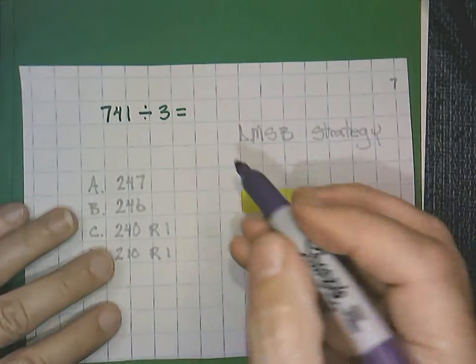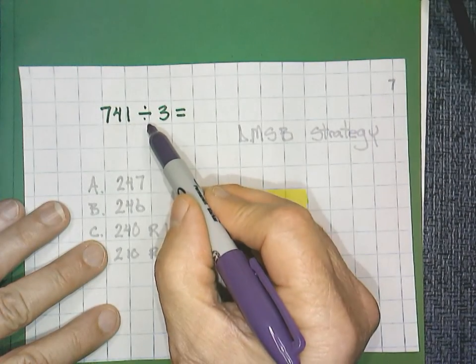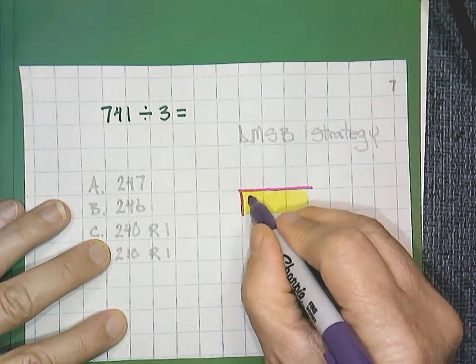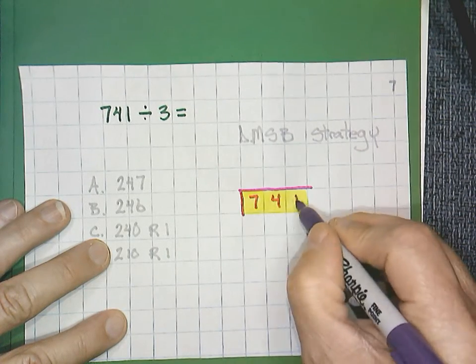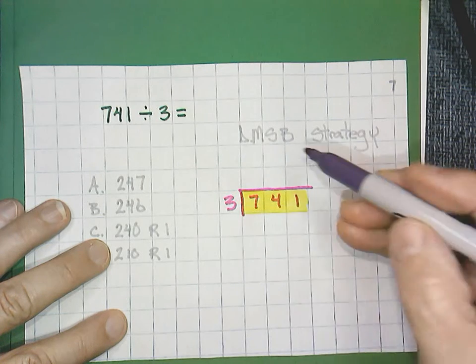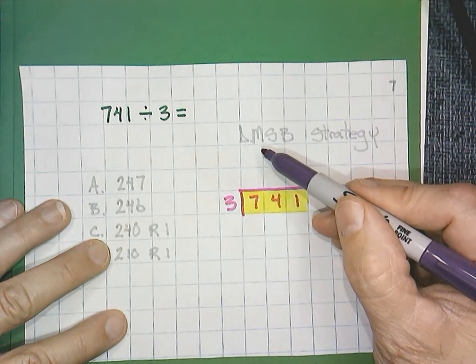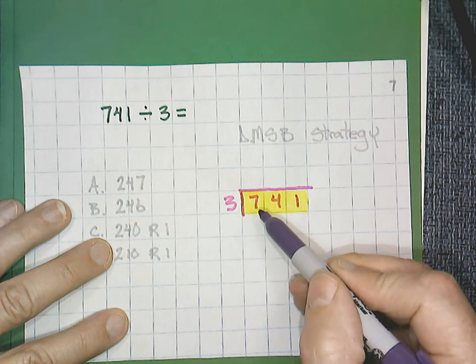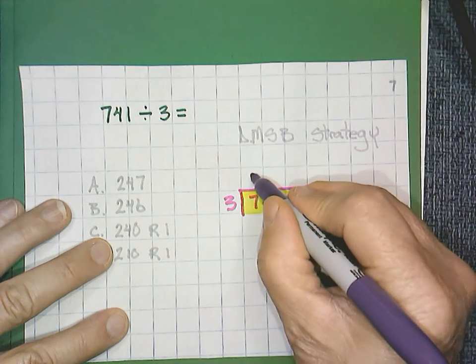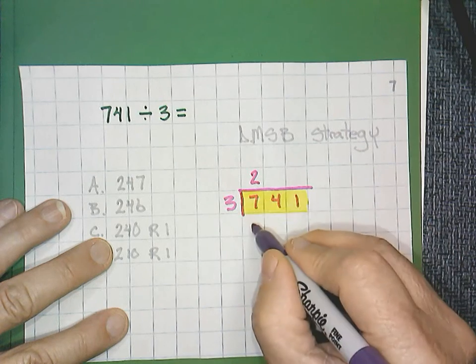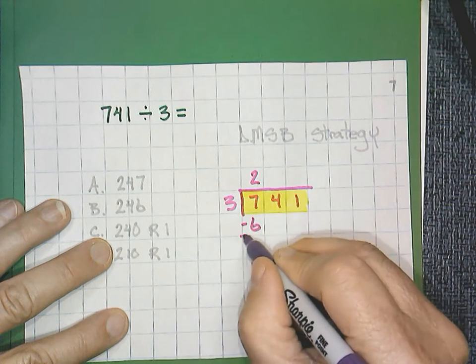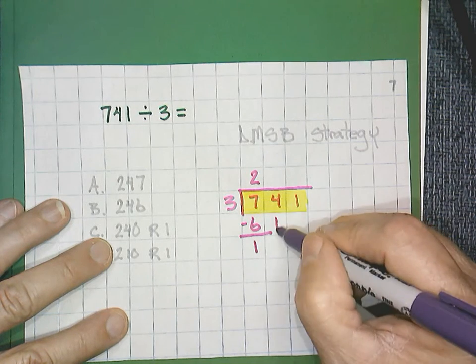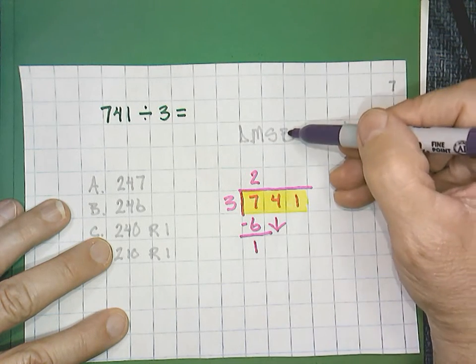One more. 741 divided by 3. Let's use our divide, multiply, subtract, and bring down. We're going to go digit by digit. 3 can go into 7. It goes 2 times. 2 times 3 is 6. I subtract. 7 minus 6 is 1. Bring down. That's our 4. Bring down. So we divided, multiplied, subtract. Now we're bringing down to start over. Bring down the 4.